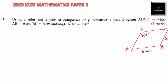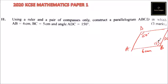So with that sketch, we can be able to plot that. Since it is a parallelogram, if angle ADC is 150 degrees, then opposite angles are equal, so angle ABC is also 150 degrees. That means the remaining angles are each 30 degrees, so that the total will be 360 degrees.